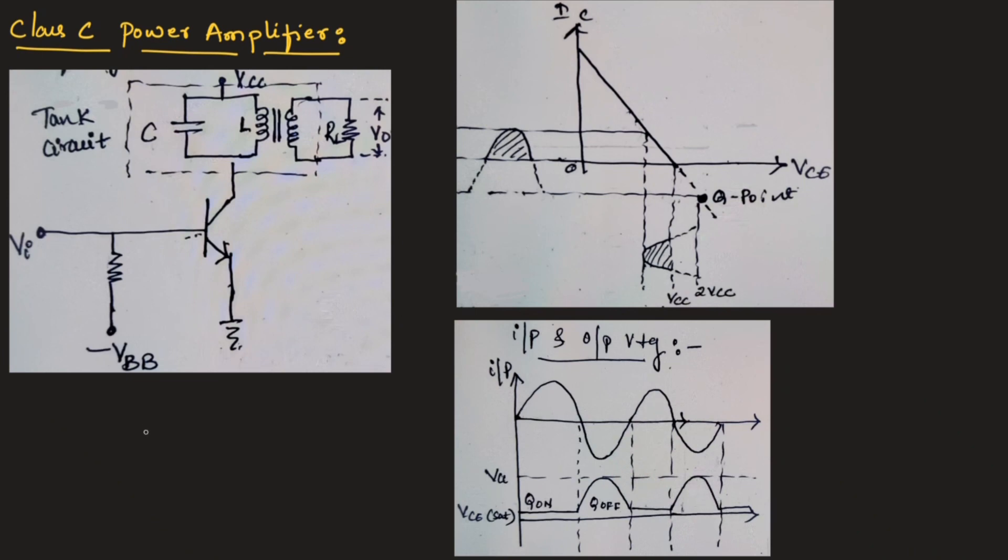The frequency of oscillation of class C power amplifier can be given as FR equals 1 divided by 2 pi square root of LC. This is the expression for frequency of oscillation of class C power amplifier.